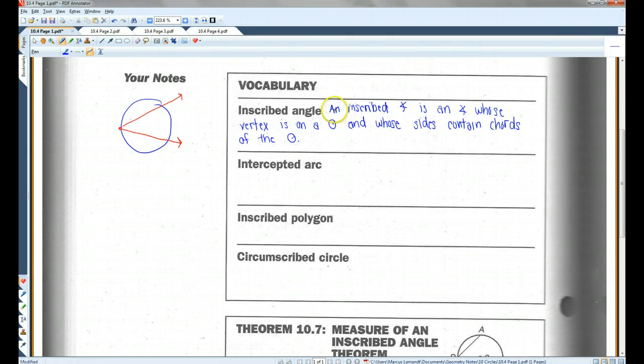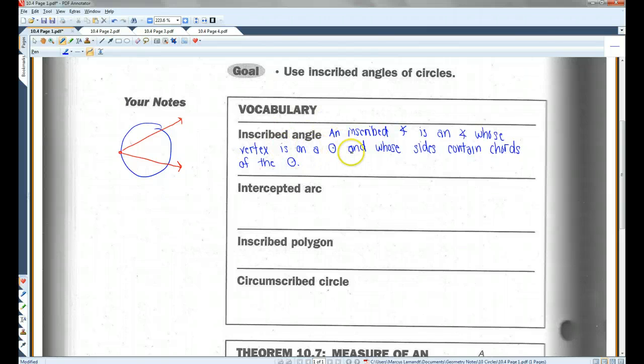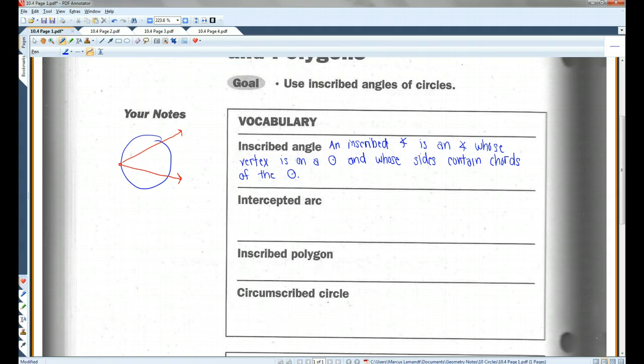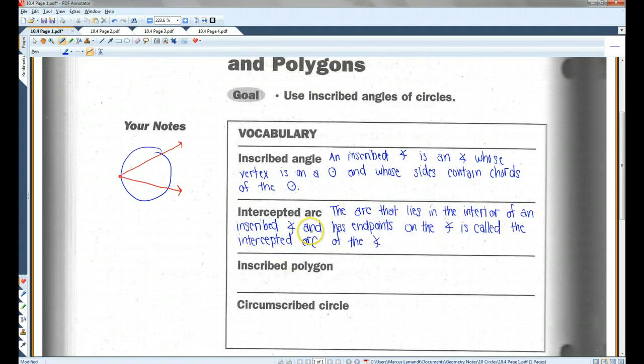An inscribed angle is an angle whose vertex is on the circle and whose sides contain cords of the circle. So for example, this is an inscribed angle. Unlike a central angle, a central angle has its vertex in the center. An inscribed angle has its vertex on the actual circle. Now, the intercepted arc would be this here. The arc that lies in the interior of an inscribed angle and has endpoints on the circle is called the intercepted arc of the angle. This would be the intercepted arc because it's intercepted by the angle.